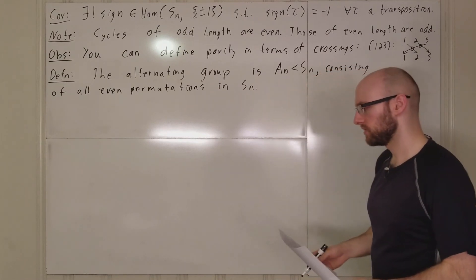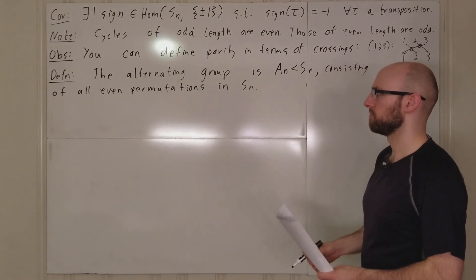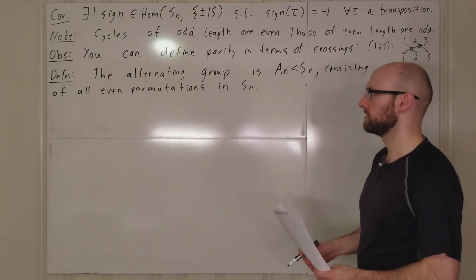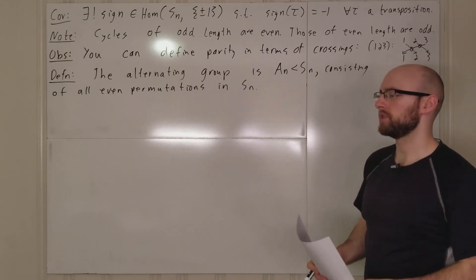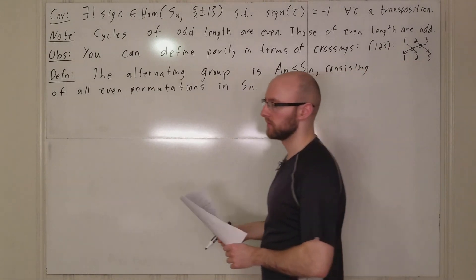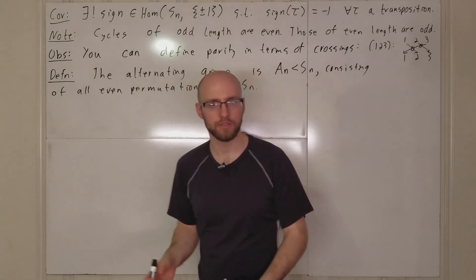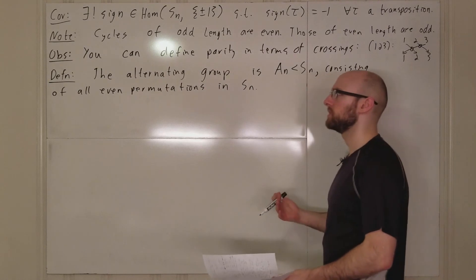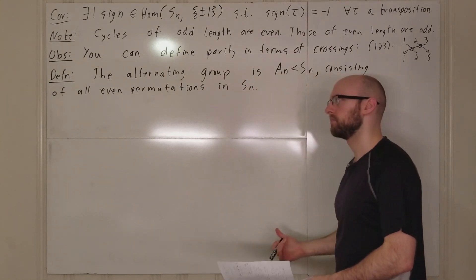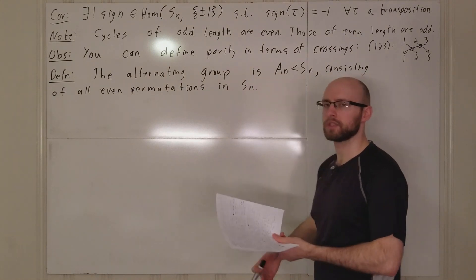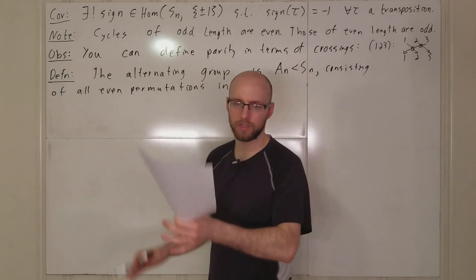So, this will contain things which can be written as a product of two transpositions, such as three cycles, which is counterintuitive because three is odd, but three cycles can be written as product of two two cycles.